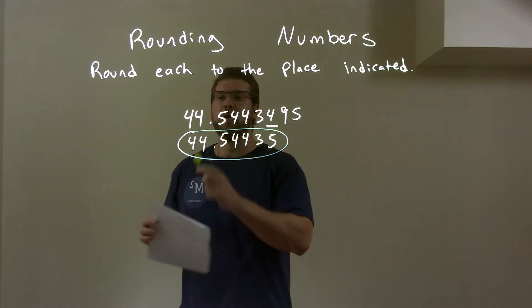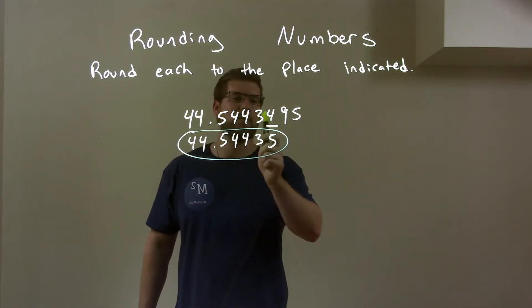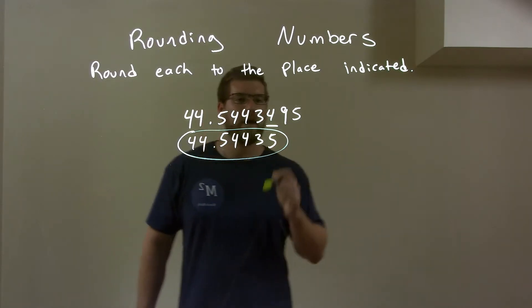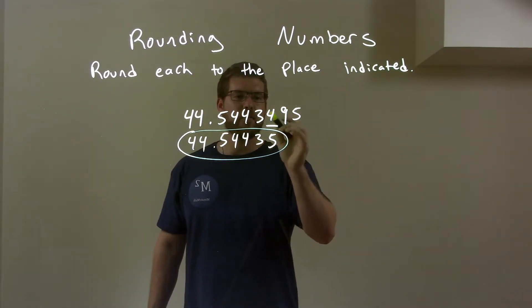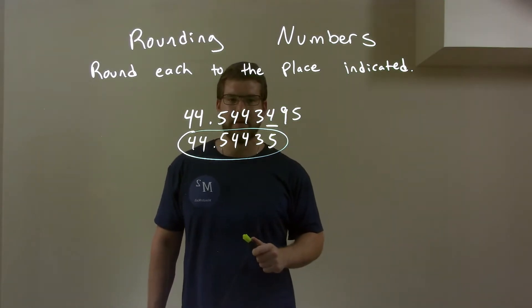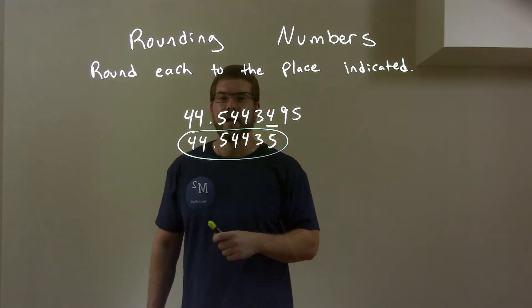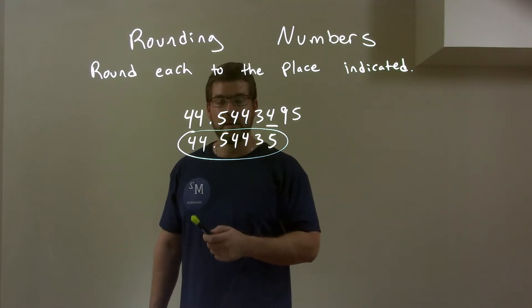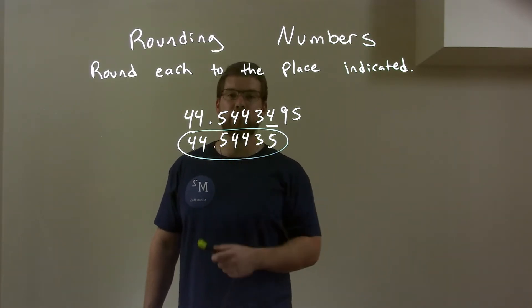So, quick recap. We're given 44.5443495. We're rounding at this 4. The 9 causes the 4 to round up to a 5. The right part disappears, and we bring that to the left. And we have our final rounded answer of 44.54435.